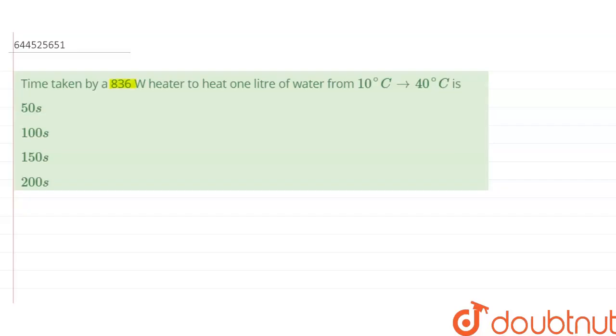Time taken by an 836 watt heater to heat one liter of water from 10 degree centigrade to 40 degree centigrade is? We have to find out the time taken by the heater to heat one liter of water from 10 degree centigrade to 40 degree centigrade.